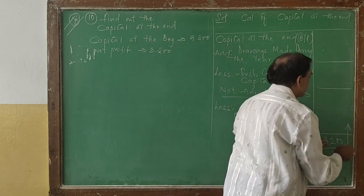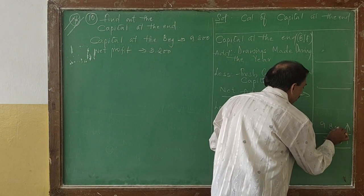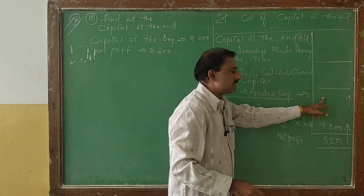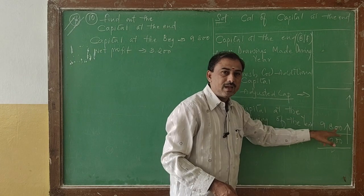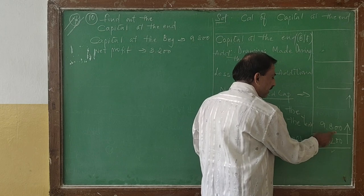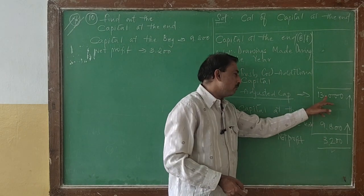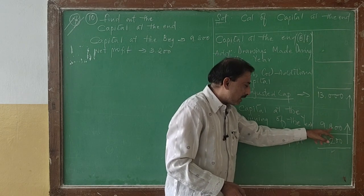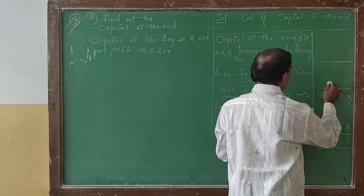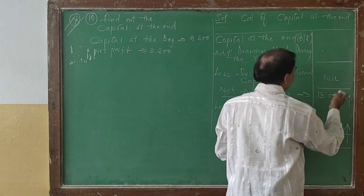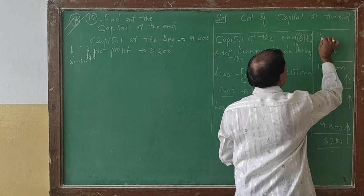Going from downwards to upwards: 3,200 is the net profit. Capital at the beginning is given as 9,800. When you get a net profit, the net adjusted capital should be more than capital at the beginning — so 9,800 plus 3,200 equals 13,000. Fresh or additional capital is nil. No drawings either. So capital at the beginning is 13,000.